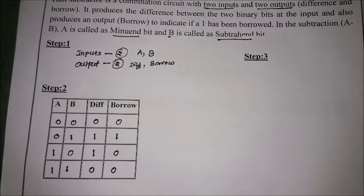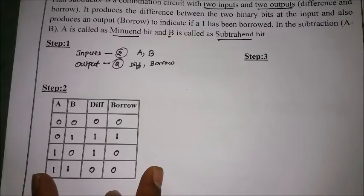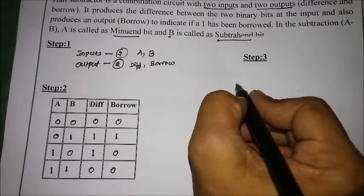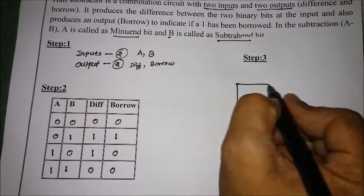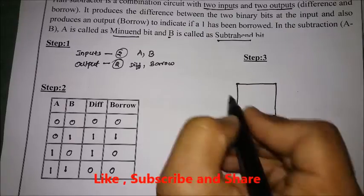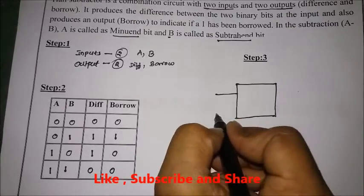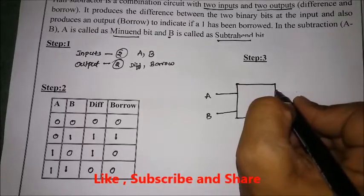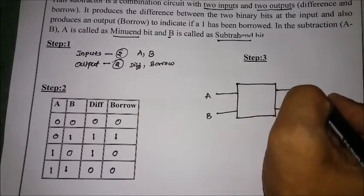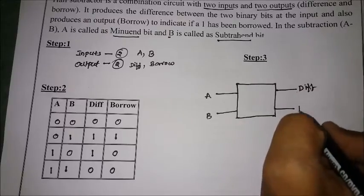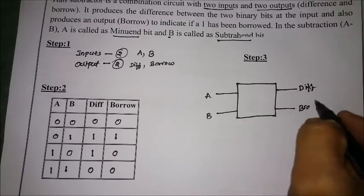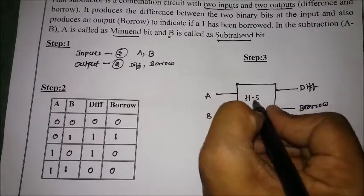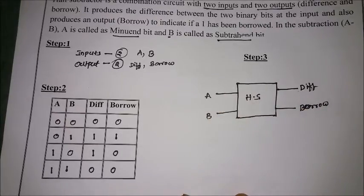Step three is to draw the block diagram. The half subtractor block diagram has two inputs A and B, and two outputs — one is the difference and the other is the borrow.